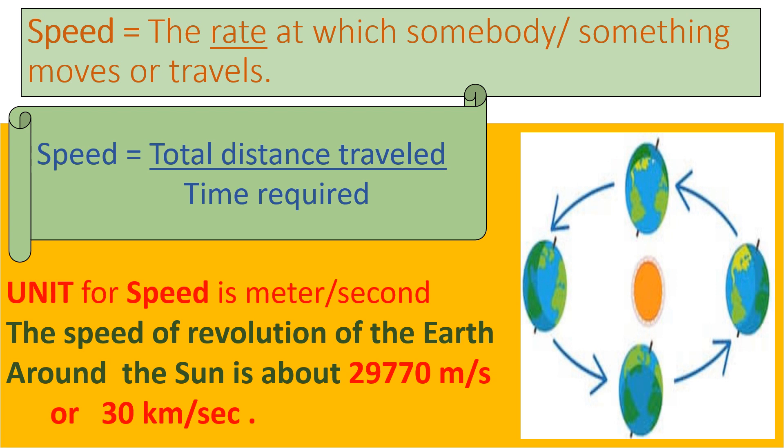Speed is the rate at which somebody or something moves. Rate means time required. For example, the Earth revolves around the Sun with a speed of 30 km per second.